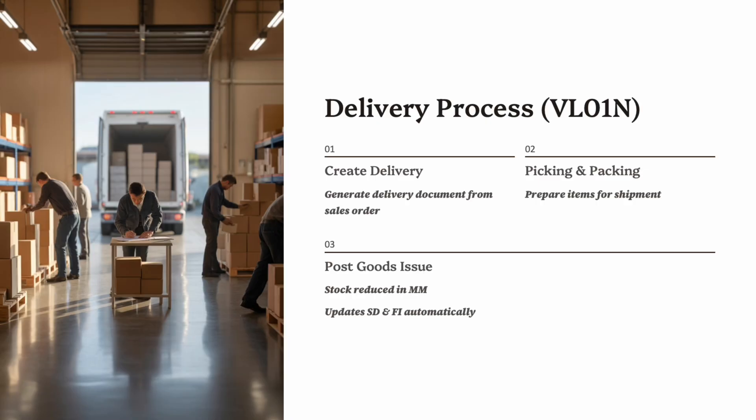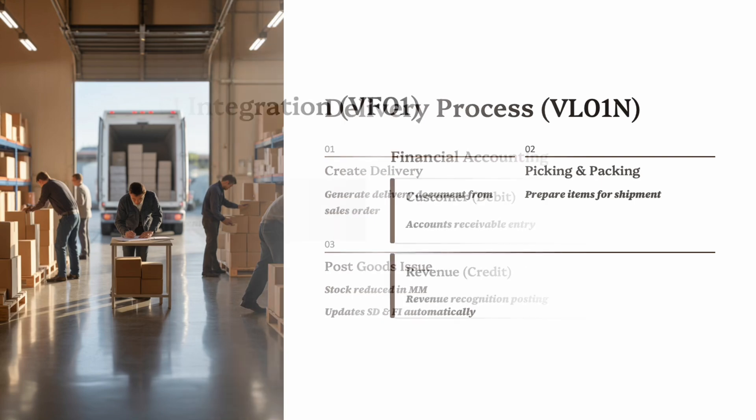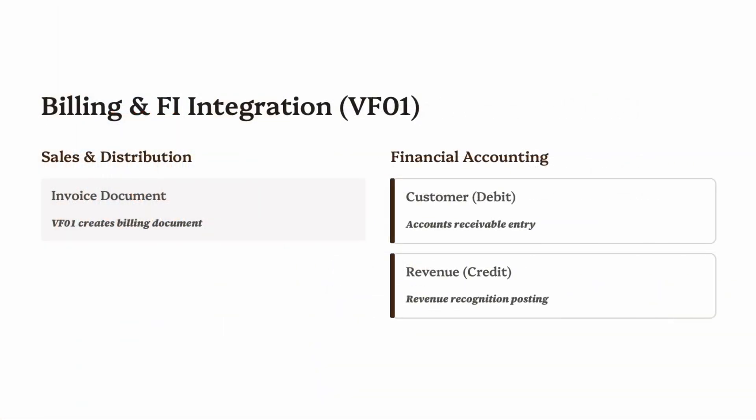Revenue recognition will happen later at billing. For example, you create a delivery for order number 4500 in VL01N. After goods are picked and shipped, you post goods issue, stock decreases, and the system records the movement in both MM and SD. Delivery ensures that physical logistics are perfectly aligned with SAP data — no shipment happens without it.